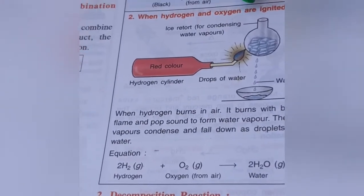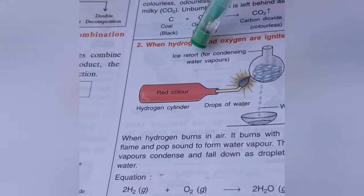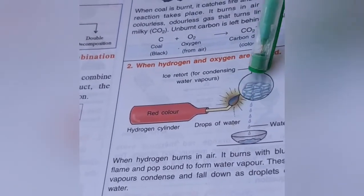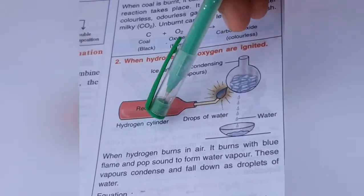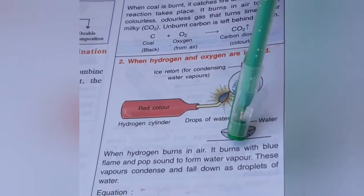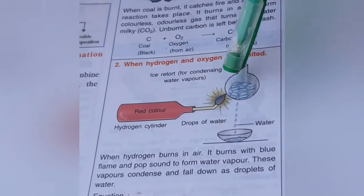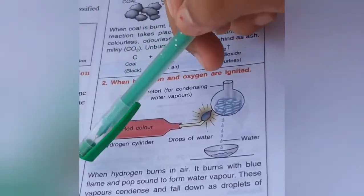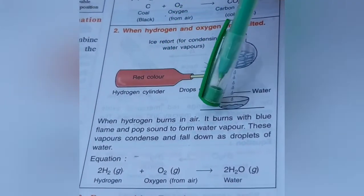When hydrogen and oxygen are ignited, an ice retort is used for condensing water vapors. The red hydrogen cylinder produces drops of water. When heated, the drops of water collect in the bowl.